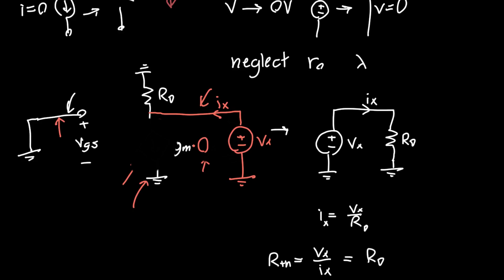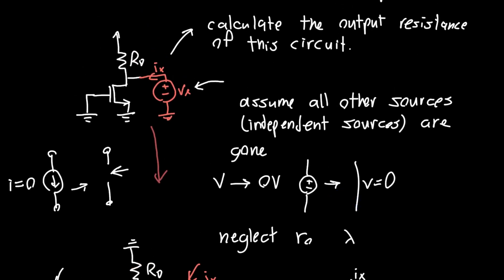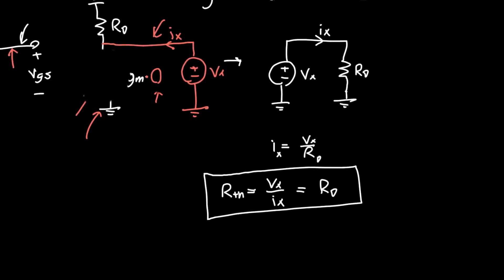If we want to rearrange this, V_x over I_x so that we can calculate the Thevenin resistance, that's just equal to RD and we're done. That was a way of calculating the Thevenin resistance, or in our case the output resistance since we're calculating it at the output - this is V_out.